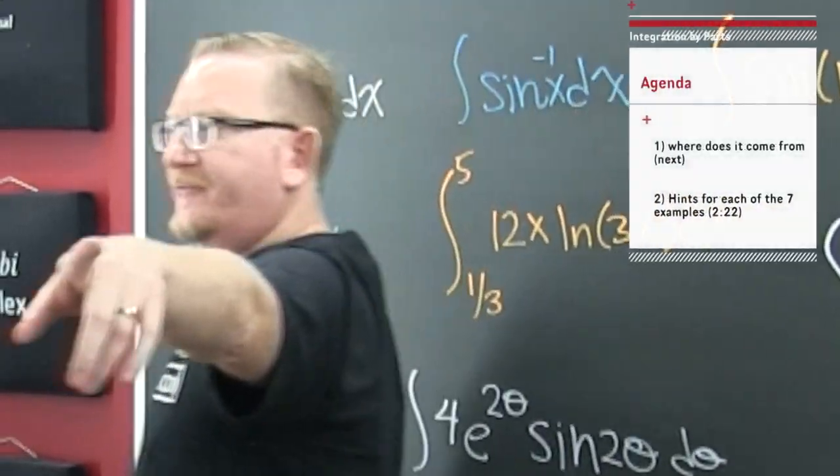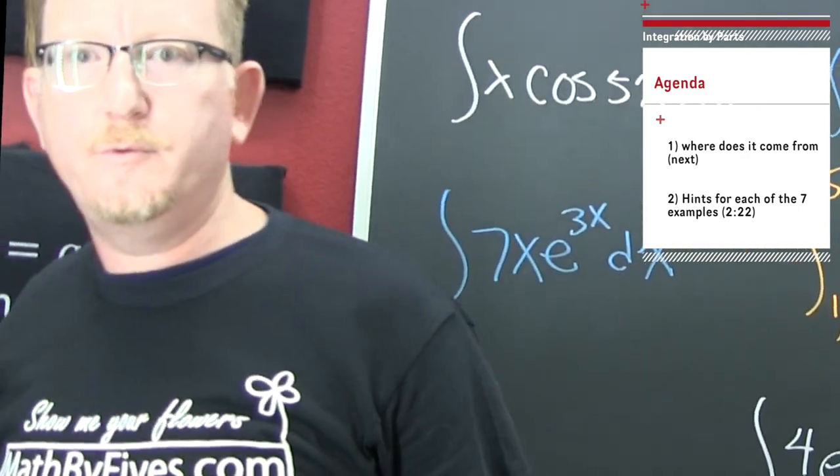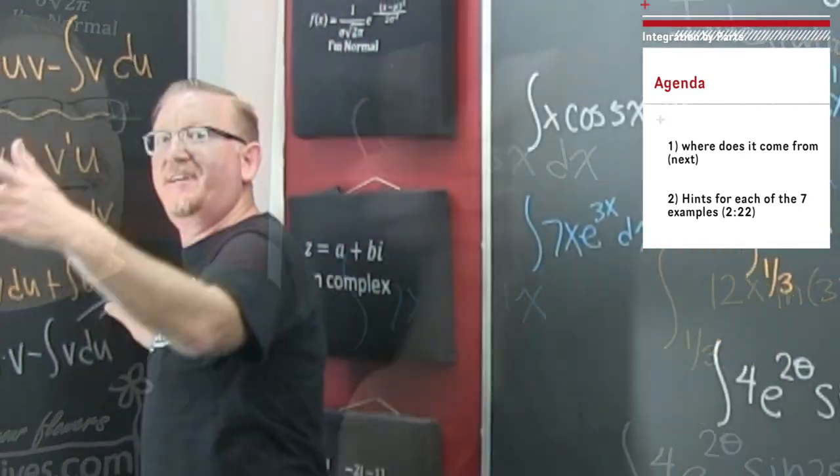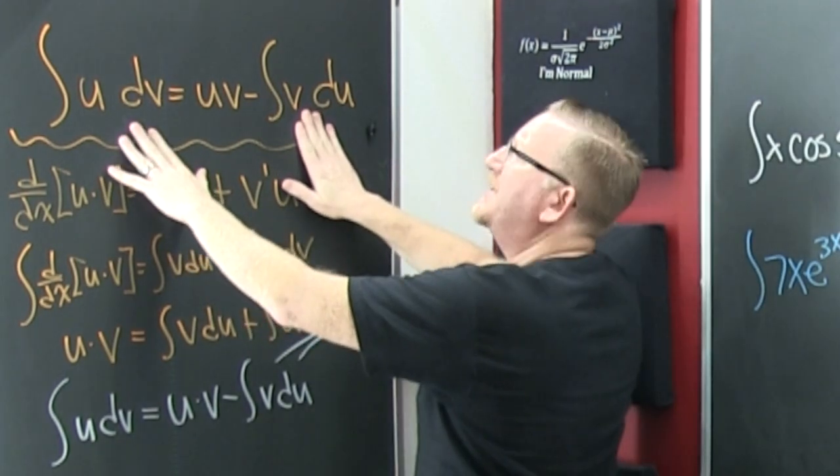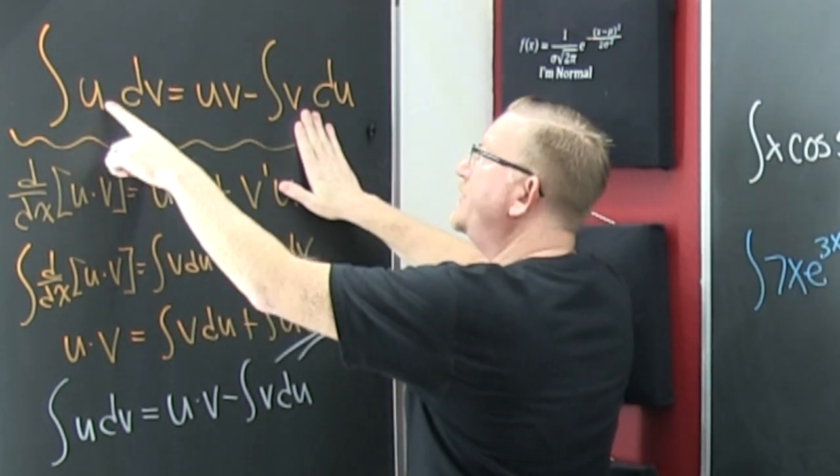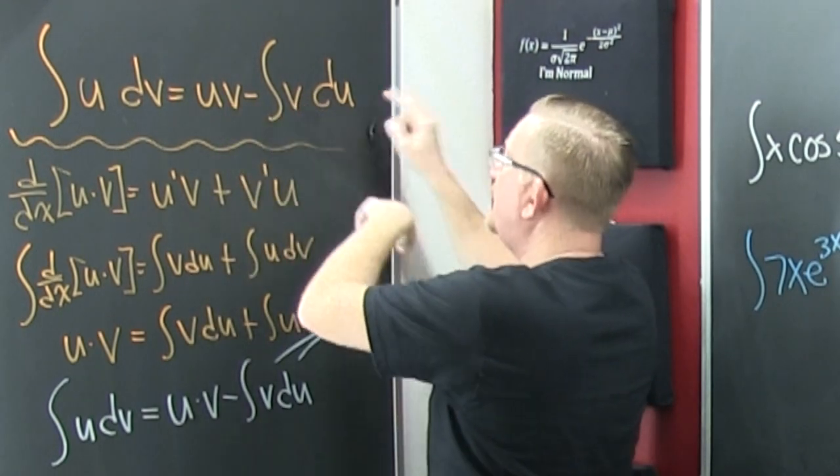Where does that come from? It's right over here! Alright, you know the familiar form. That's all u. The integral of u dv. That's uv minus the integral v du.